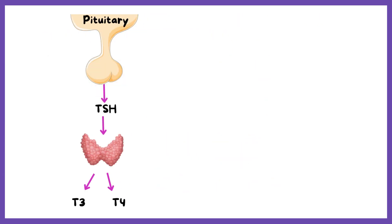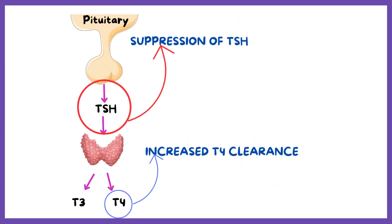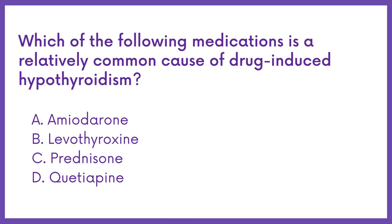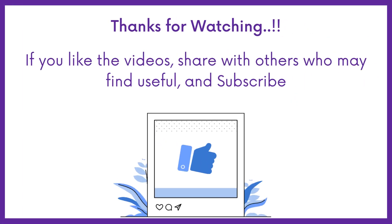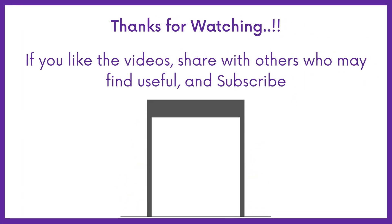Another mechanism is increased T4 clearance and suppression of TSH by bexarotene, an antineoplastic agent used for the treatment of cutaneous T-cell lymphoma. Therefore, the answer is option A. If you find this video helpful, share it with others who may find it helpful too.